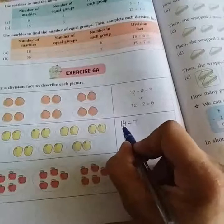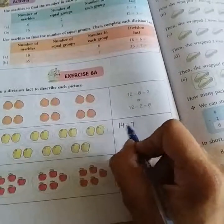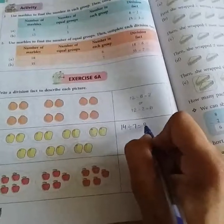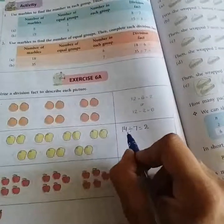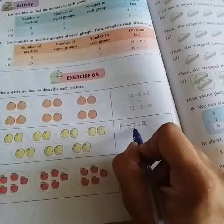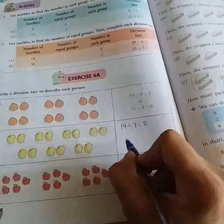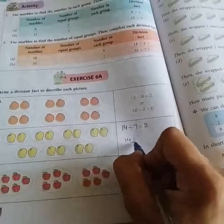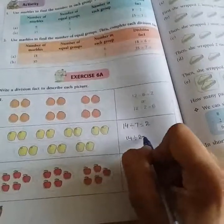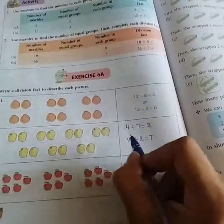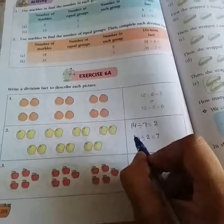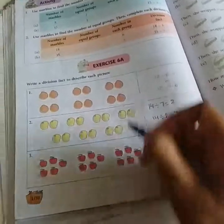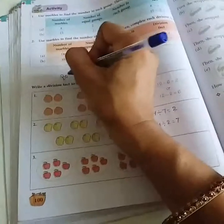Now, 14 divided by 7. 7 ki table mein 14 kab aayega? That means 7 two times is 14. Or we can say 14 divided by 7 is equal to 2. Or in the other way we can write down 14 divided by 2 equals to 7. In both the way you can write down. Now, the third question you have to do yourself in the book only. This is book work.